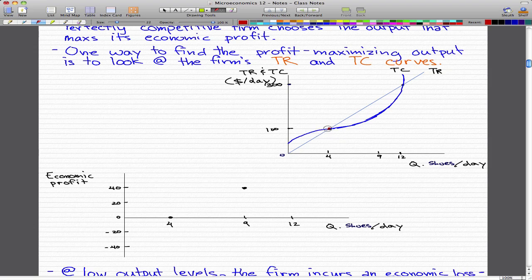We also see that the total cost is also $100 per day. So what we have here is total revenue minus total cost, which is 100 minus 100, and that will give us an amount of zero, which I indicated here with this black dot. So the economic profit at four shoes per day is zero.